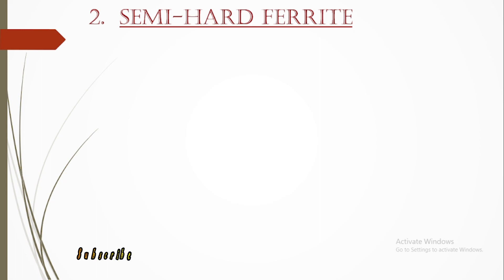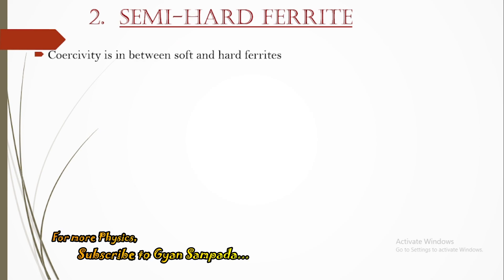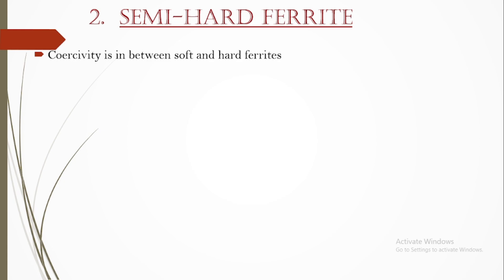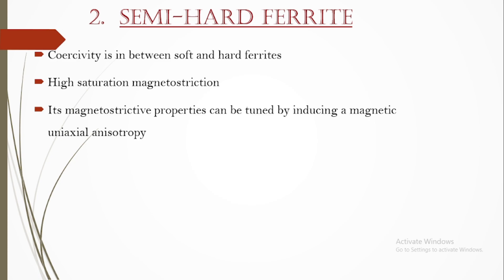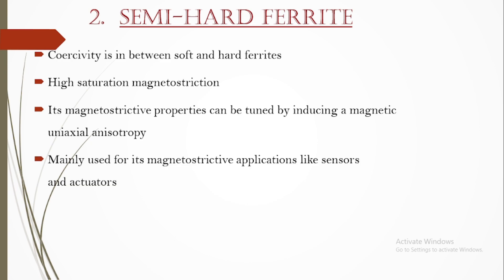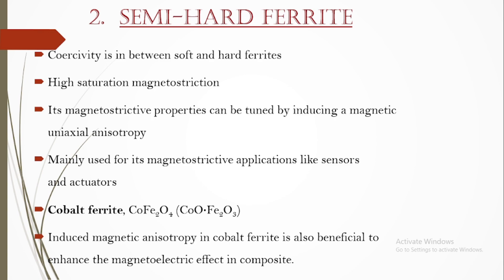Now let us move on to the next type: semi-hard ferrites. Based on the name, we can understand it is neither soft nor hard — its coercivity lies intermediate between both. It is not as easy to demagnetize as soft ferrite, nor as difficult as hard ferrite. Semi-hard ferrites have high saturation magnetostriction, which is of prime importance. Their magnetostrictive properties can be tuned by inducing a magnetic uniaxial anisotropy, making them useful in sensors and actuators.